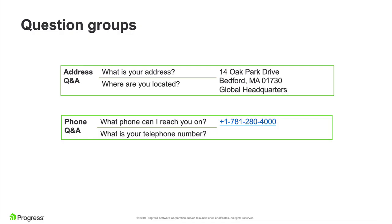To explain how NLP works, we'll analyze the whole process by using two Q&A examples. Let's imagine we have one Q&A that allows the user to ask for the address with two possible questions: 'What is your address?' and 'Where are you located?' The answer for that should be 14 Oak Park Drive, Bedford, etc.